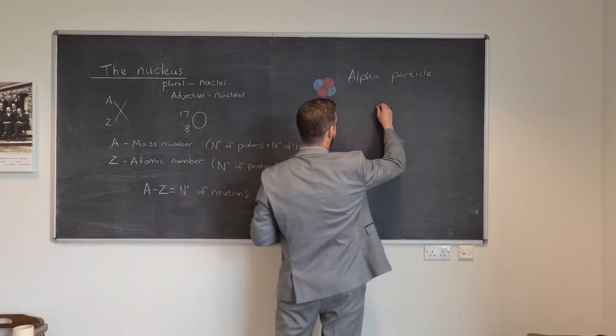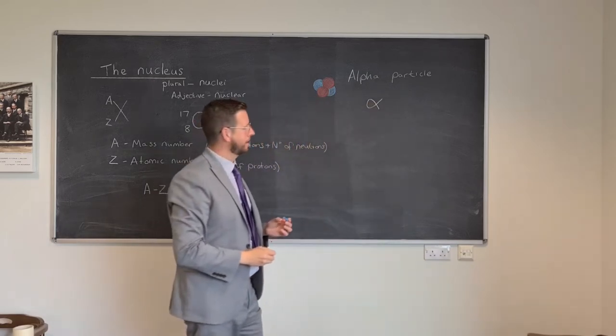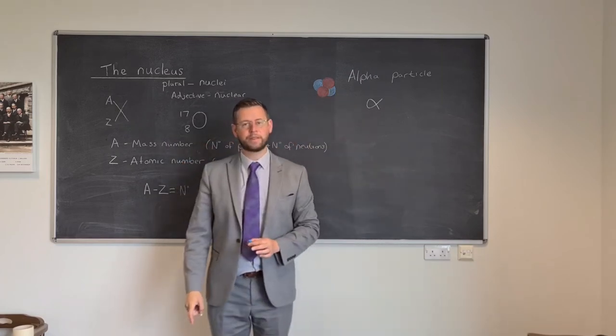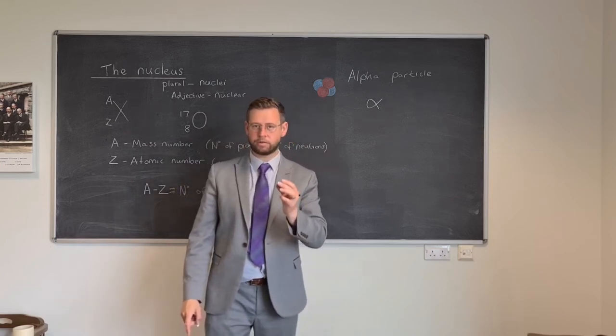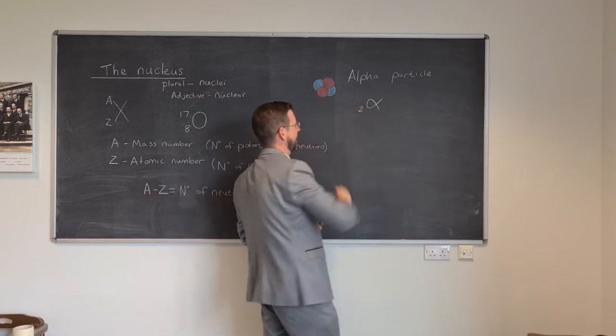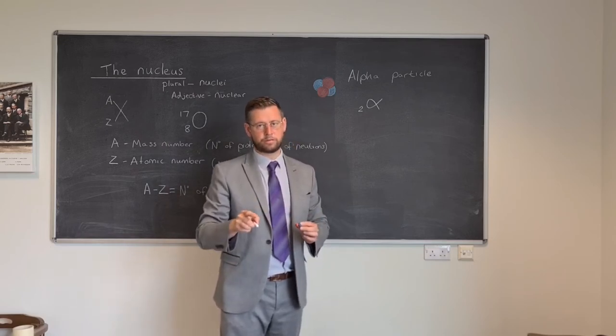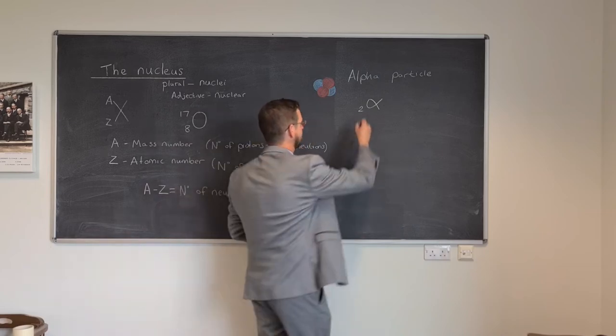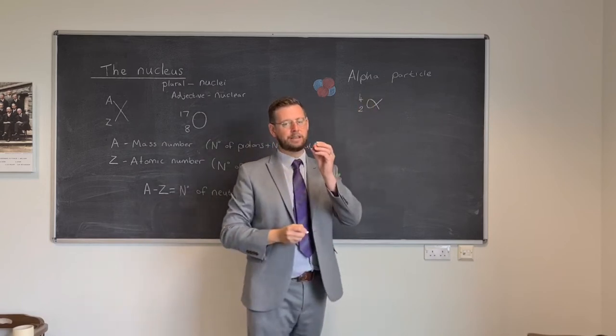What we can use is the notation developed here on our alpha particle to describe what's in it. How many protons does it have? It has two, that means it must have a two down here in the atomic number place. It has two protons, two neutrons, which means in total it has four particles altogether. And so the mass number is four. Four times the mass of a single proton.